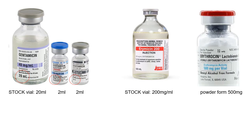The stock solution or stock vial is of different volume and different concentration. The stock volume of the first vial of gentamicin is 20 ml, then the other two are 2 ml but with different concentrations: the first is 40 mg per ml, the second is 20 mg per 2 ml, and the last is 10 mg per 2 ml. This differs from company to company, so note down the volume and stock solution concentration for your calculations.